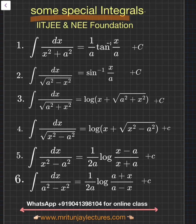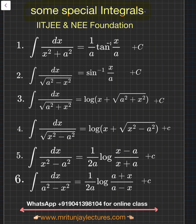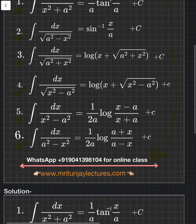Today we will focus on some special integration formula proofs, one by one, in a very comprehensive way for the IIT J foundation batch. Before you start session 3, these proofs are very important. We request all students for the IIT J foundation batch to see very carefully. If you have any doubt, comment and I will discuss again. Today we will focus on 6 formulas — 1st, 2nd, 3rd, 4th, 5th and 6th. These formulas are very important; the proofs are also important, and you should memorize each type.